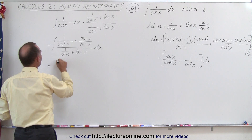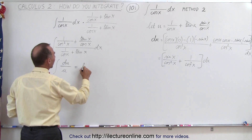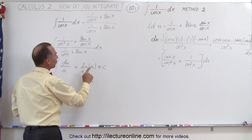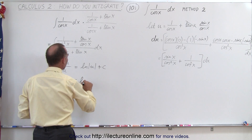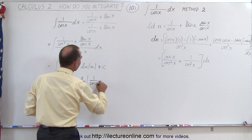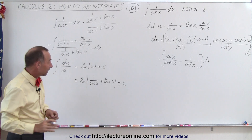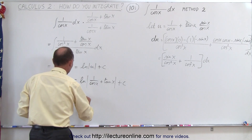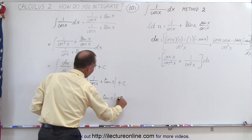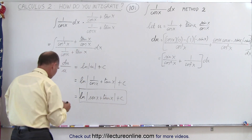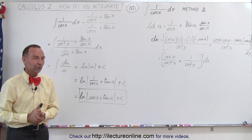That means this can now be written as the integral of du over u, which means that when we integrate it, we get the natural log of u plus the constant of integration. Since we let u equal 1 over the cosine of x plus the tangent of x, this becomes the natural log of 1 over cosine of x plus tangent of x plus C. Finally, 1 over cosine of x is the secant of x, so the answer is the natural log of the secant of x plus the tangent of x plus C — the exact same result as in the previous video.